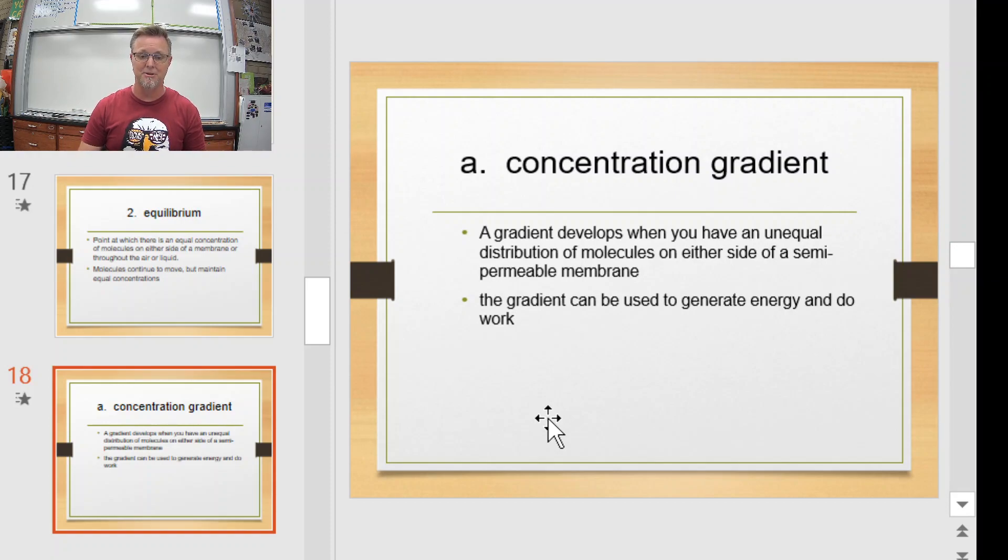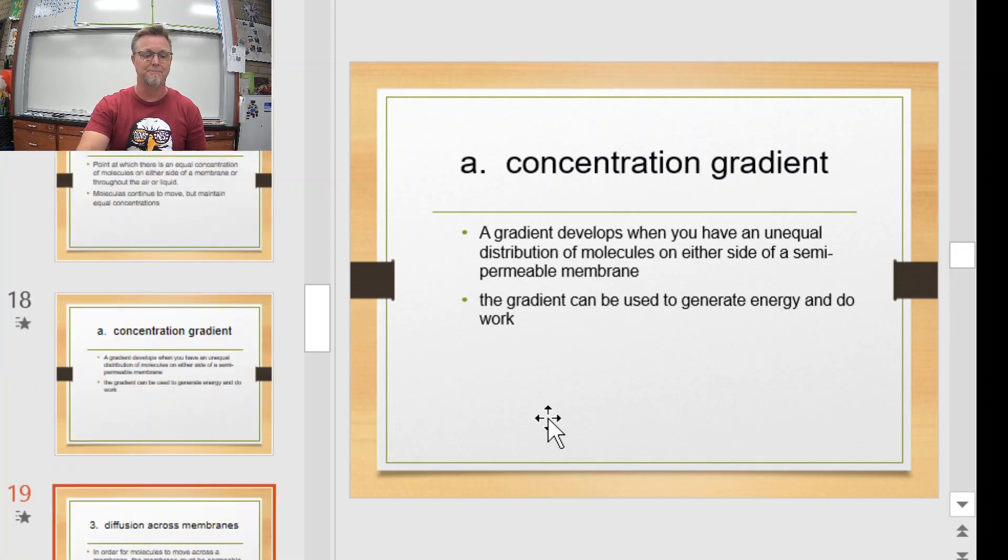If they are unbalanced, that's what we call a concentration gradient. So, again, if I have a bunch of molecules over here and very little over here, that's an unequal distribution of molecules on either side of my face, like a semi-permeable barrier, and that's what a concentration gradient's all about. These molecules want to go from one side to the other, from left to right, but there's a barrier in the way that prevents it. So that's where we get concentration gradients. These gradients can be used to generate energy and to do work, so they aren't awful, but you do need to know what they are.